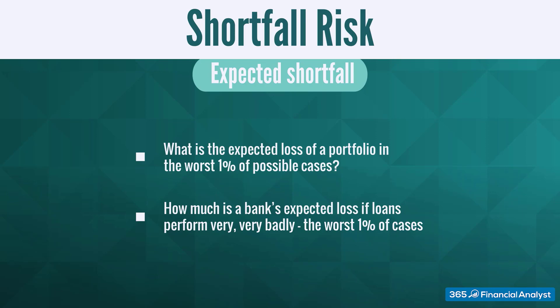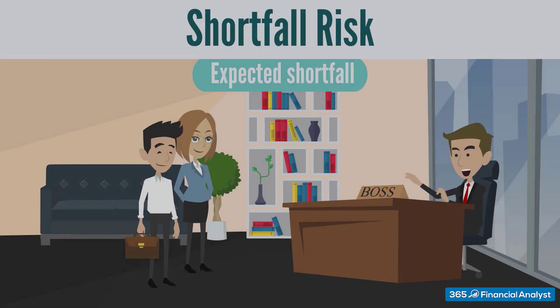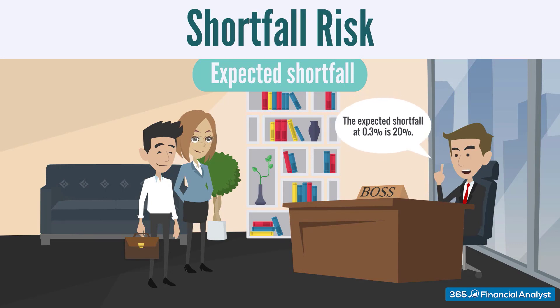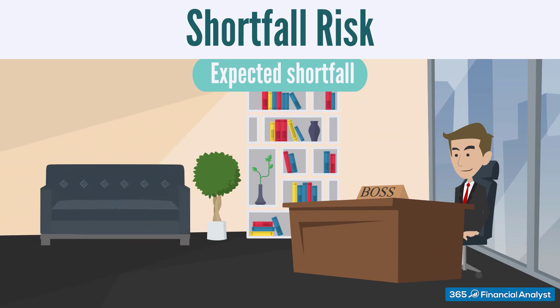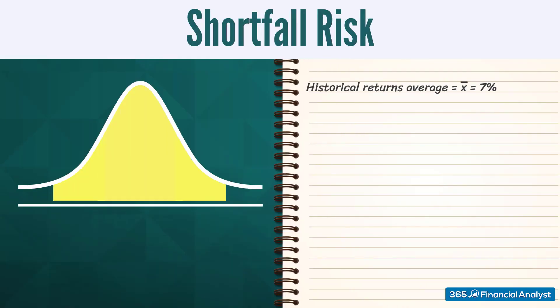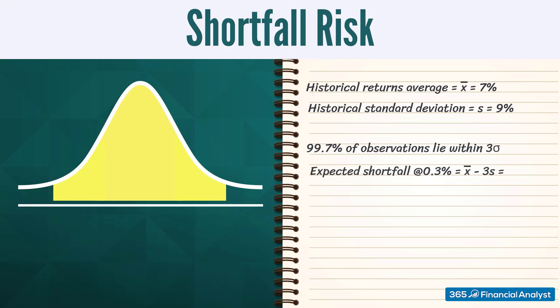Here's an example. A portfolio manager decides that the expected shortfall they would like to communicate to clients is at 0.3%. With average historical returns of 7% and an average historical standard deviation of 9%, the portfolio manager estimates the expected shortfall.